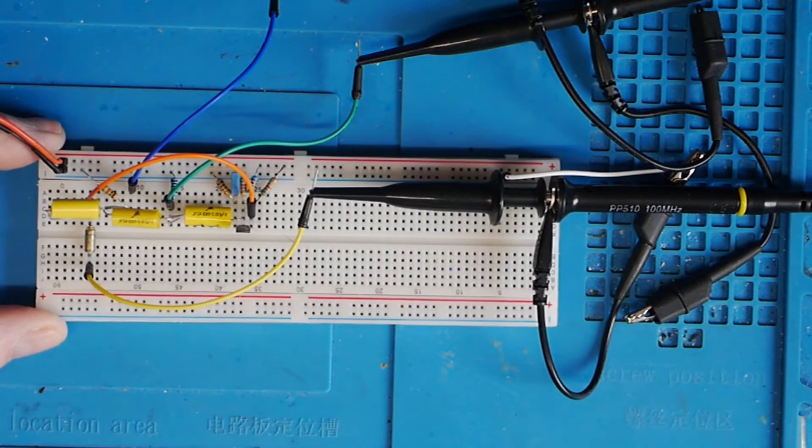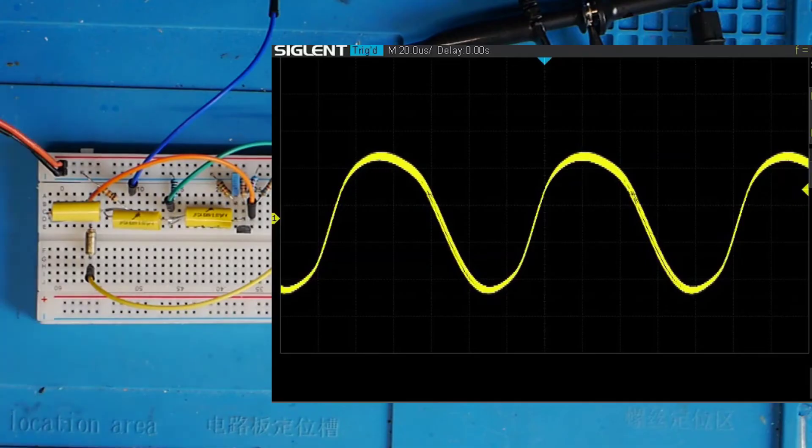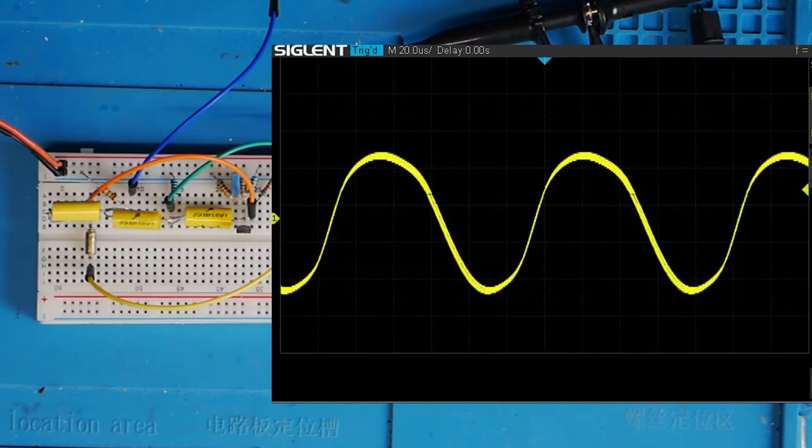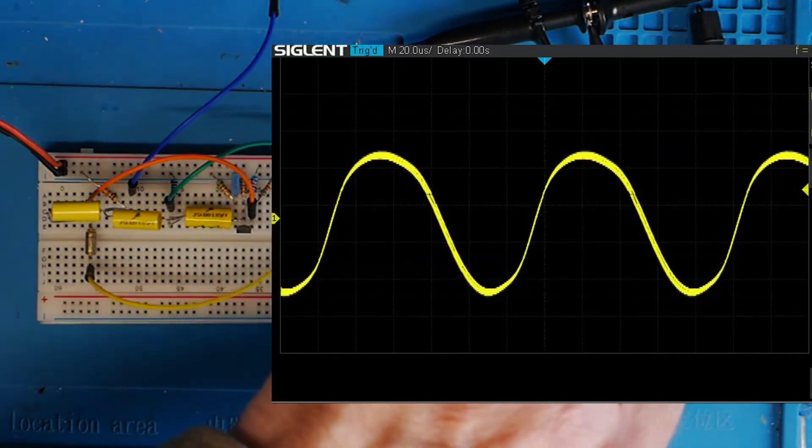I've got a yellow trace of the scope attached here to the output from this one microfarad capacitor. Let's have a look at that output and you can see there that it certainly is a pretty good approximation of a sine wave, maybe not exactly the right shape.